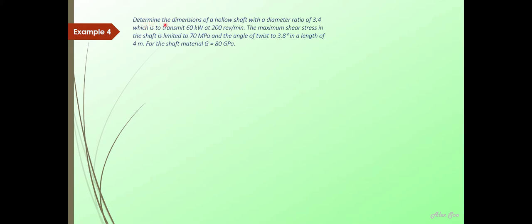So let me read out the questions for you. First, determine the dimensions of a hollow shaft with a diameter ratio of 3 to 4, which is to transmit 60 kilowatt power at a speed of 200 revolutions per minute. The maximum shear stress in the shaft is limited to 70 MPa and the angle of twist to 3.8 degrees in a length of 4 meters. For the shaft material, the modulus of rigidity or the shear modulus is 80 GPa.